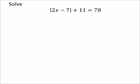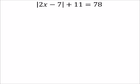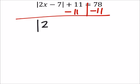We're solving for x on this one. The absolute value of 2x minus 7 plus 11 equals 78. Like I said before, we've got to solve for the absolute value first. We'll need to subtract 11 from both sides, and that gives us the absolute value of 2x minus 7 equals 67.